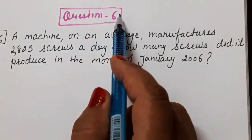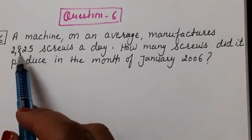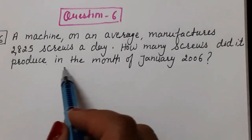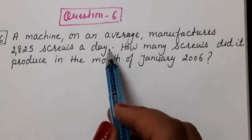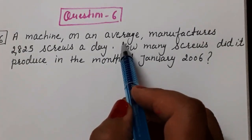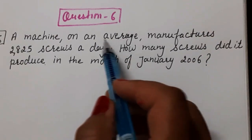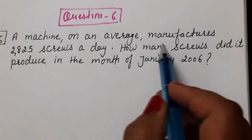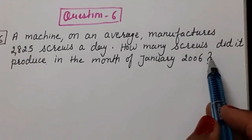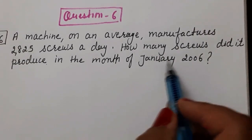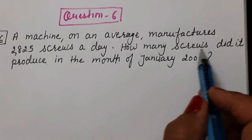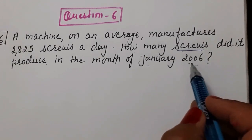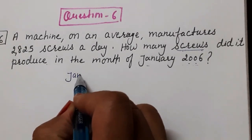Next, Question Number 6: A machine on an average manufactures 2,825 screws in a day. How many screws did it produce in the month of January 2006? So the machine on average — meaning some days it produces more, some days fewer — but on average it makes 2,825 screws per day. January has 31 days.